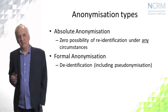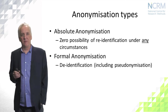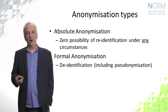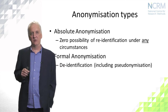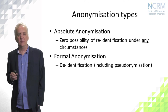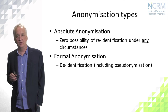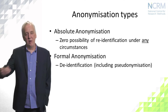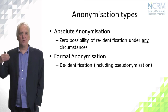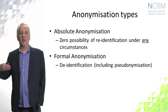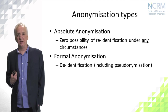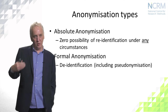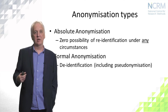Formal anonymisation is the other side of the coin — it's just de-identification, a stripping away of those direct identifiers or possibly replacing them by pseudonyms. And this is not sufficient because there remains the possibility that within the data there are indirect identifiers which enable somebody who wishes to re-identify.